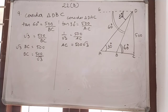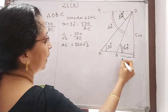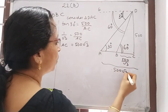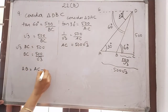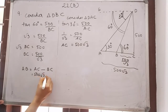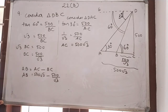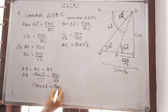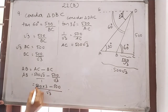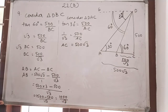AC is 500 root 3 and BC is 500 divided by root 3. What about AB? AB equals AC minus BC, that is 500 root 3 minus 500 divided by root 3. Taking LCM as root 3: 500 root 3 into root 3 gives 1500, minus 500, divided by root 3. That is 1000 divided by root 3. So AB equals 1000 divided by root 3.